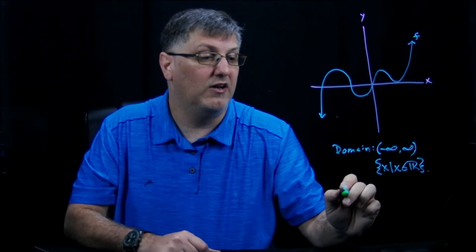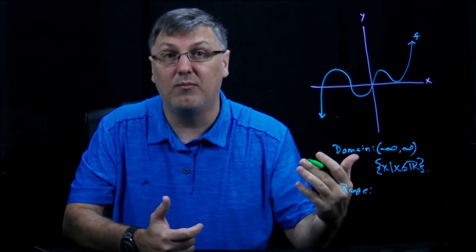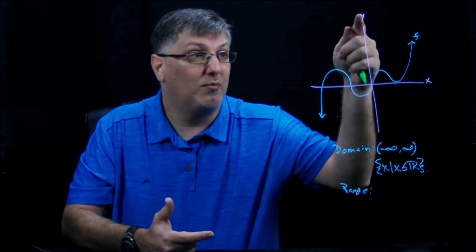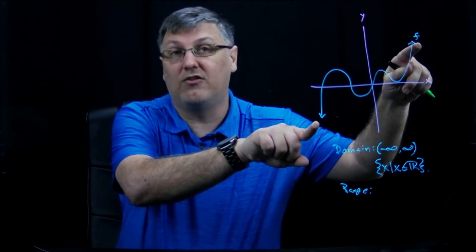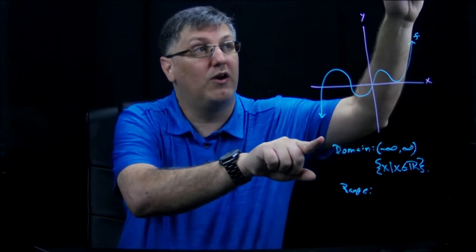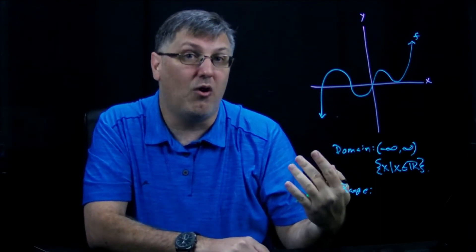Now let's look at my range. The range of a polynomial, the range is going to be your y values. And then we're just going to look at the arrows here, or at the highest or lowest point. This arrow is going up forever, and this arrow is going down forever. So that means it's going to include all of my y values.